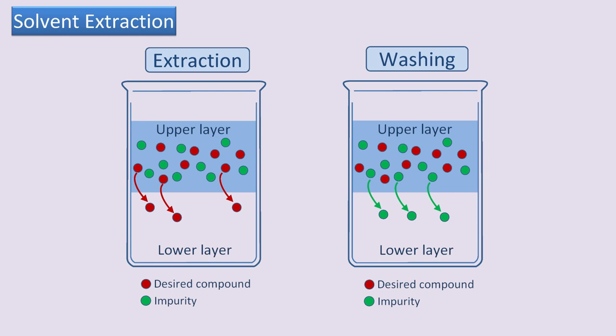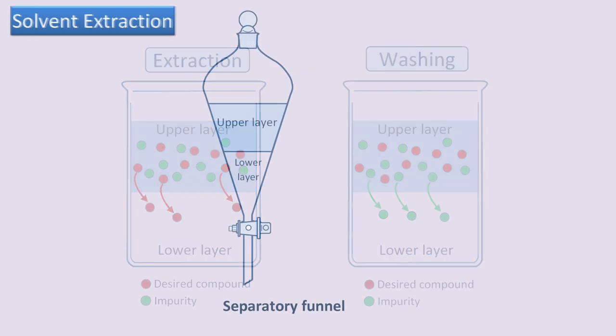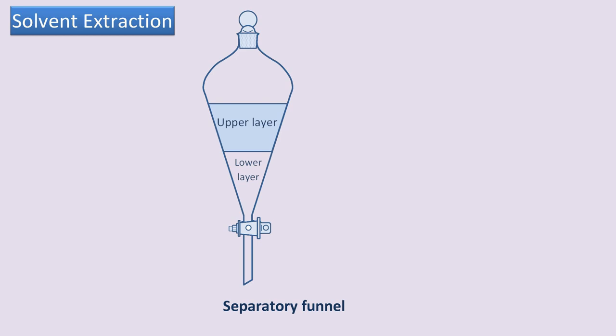Now when we perform extractions using tens or hundreds of milliliters of solvents, we make use of a specially designed piece of apparatus called a separatory funnel, or just separating funnel, and often we just say sep funnel for short. These pear-shaped separating funnels are equipped with a stopcock at the restricted end, and this allows for careful removal and separation of the lower layer from the upper layer.